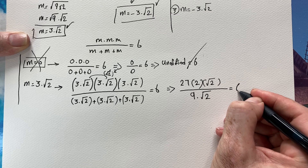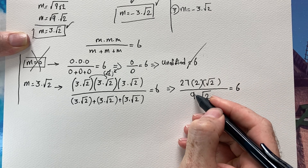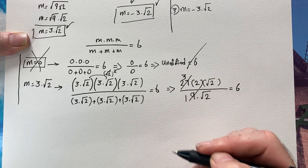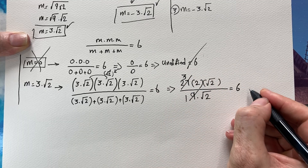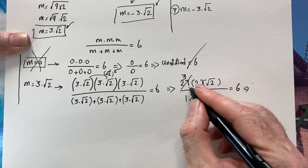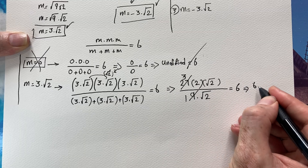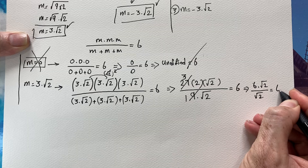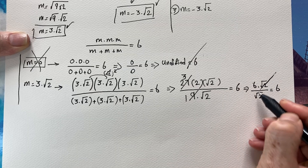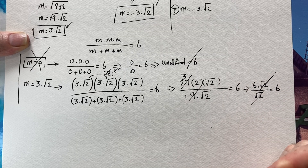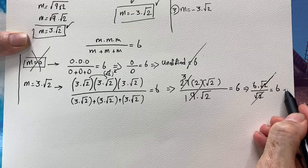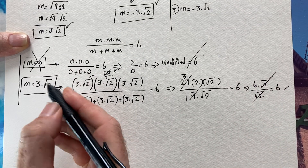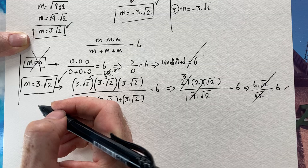We have 9√2 on the left-hand side and 6 on the right-hand side. Dividing: 9 divided by 9 is 1, and 27 divided by 9 is 3. So we get 3 times 2 equals 6. The √2 on top and √2 on bottom cancel, leaving 6 equals 6. So m equals 3√2 is a valid answer.